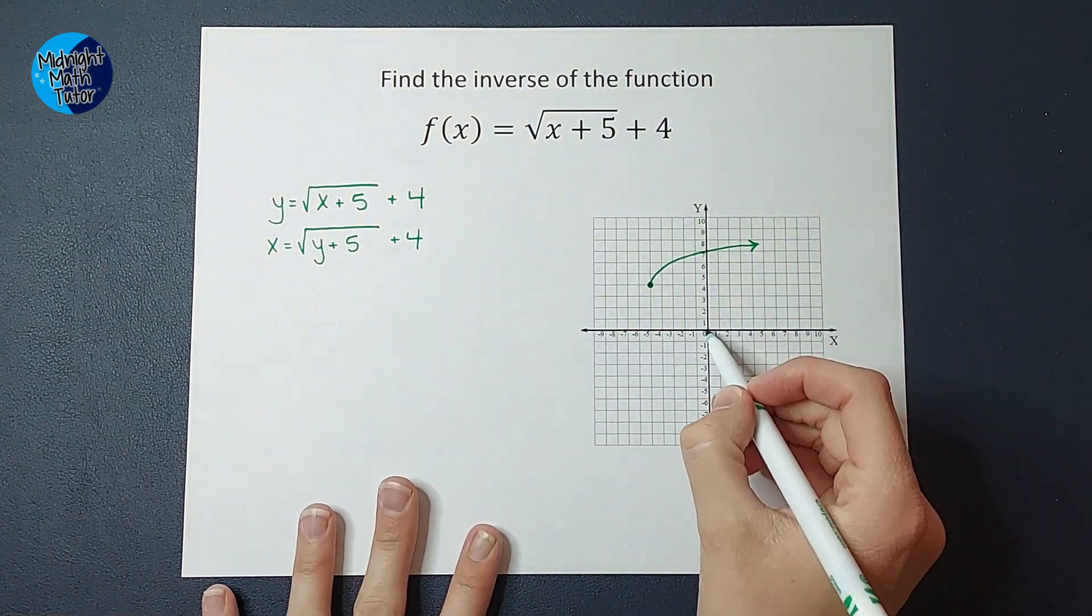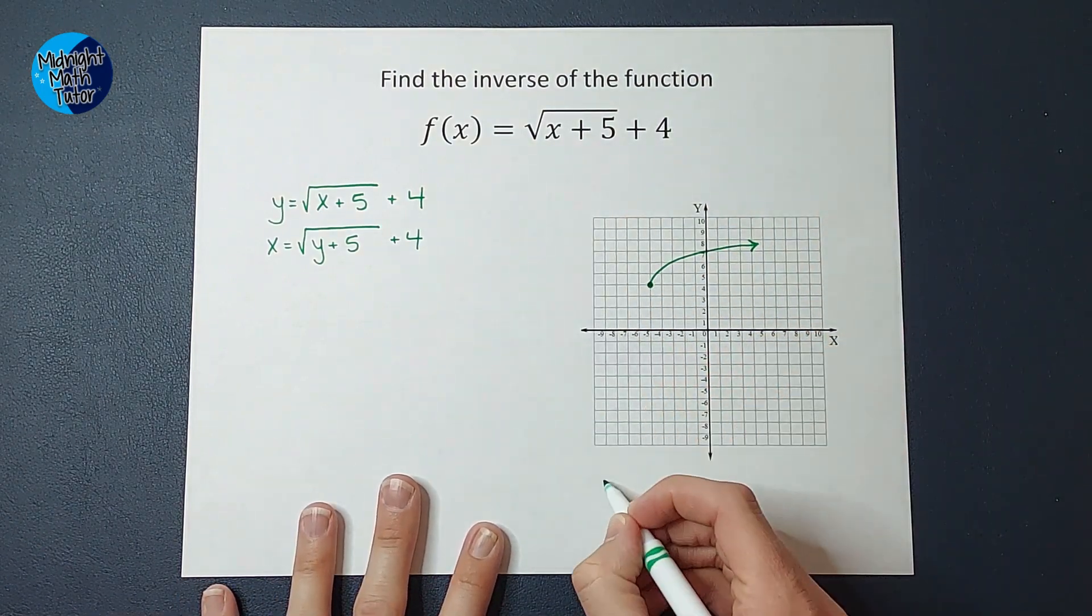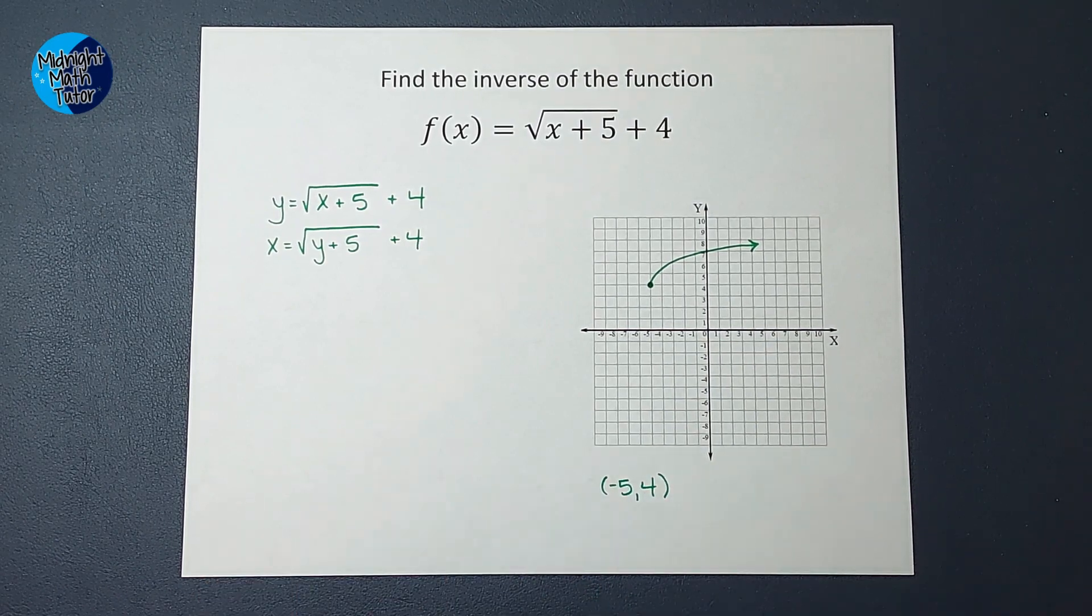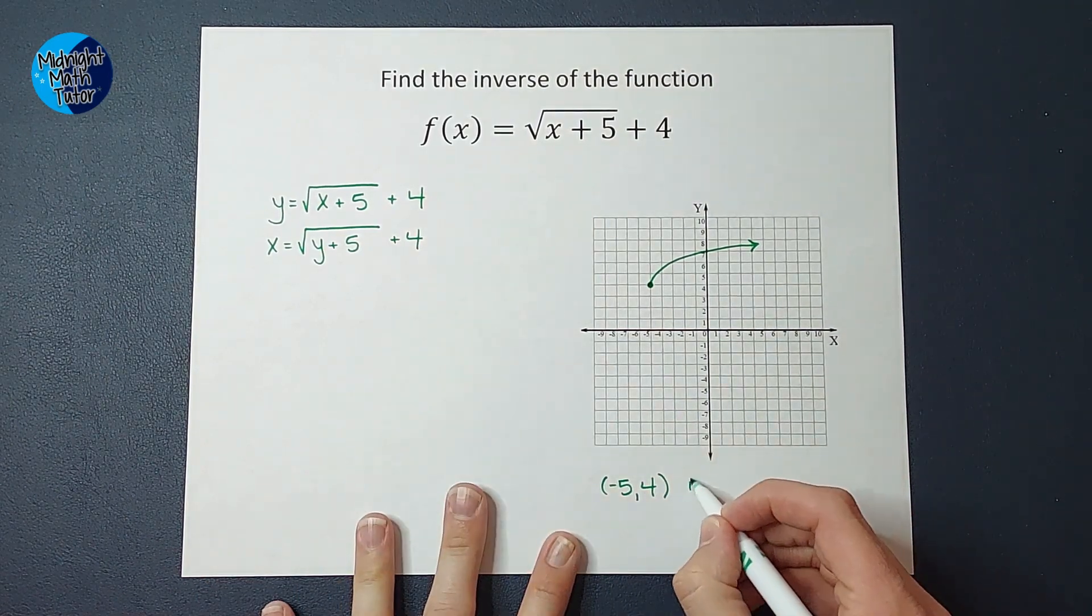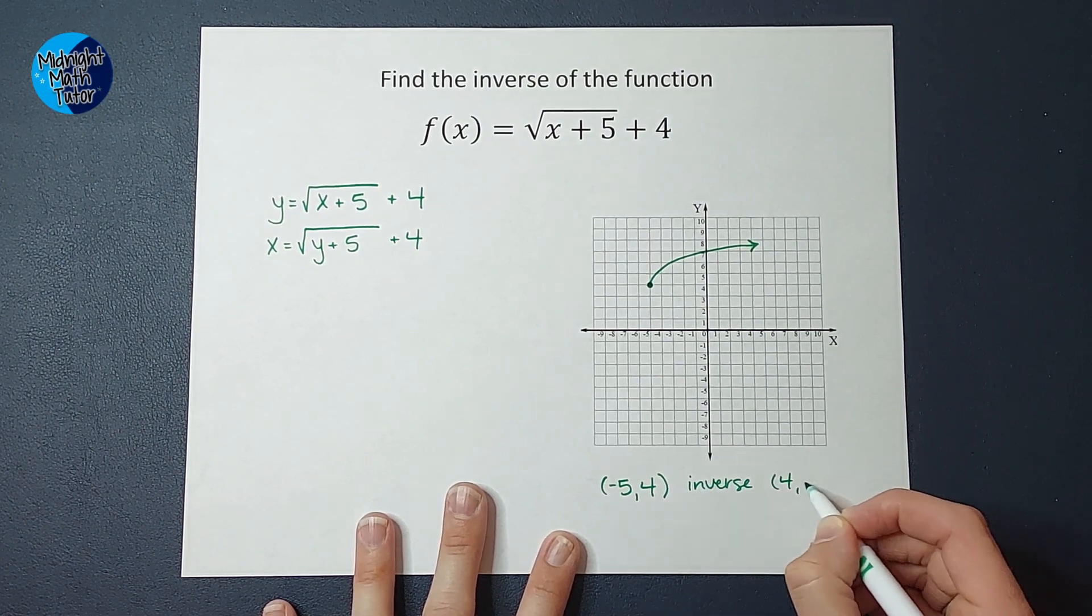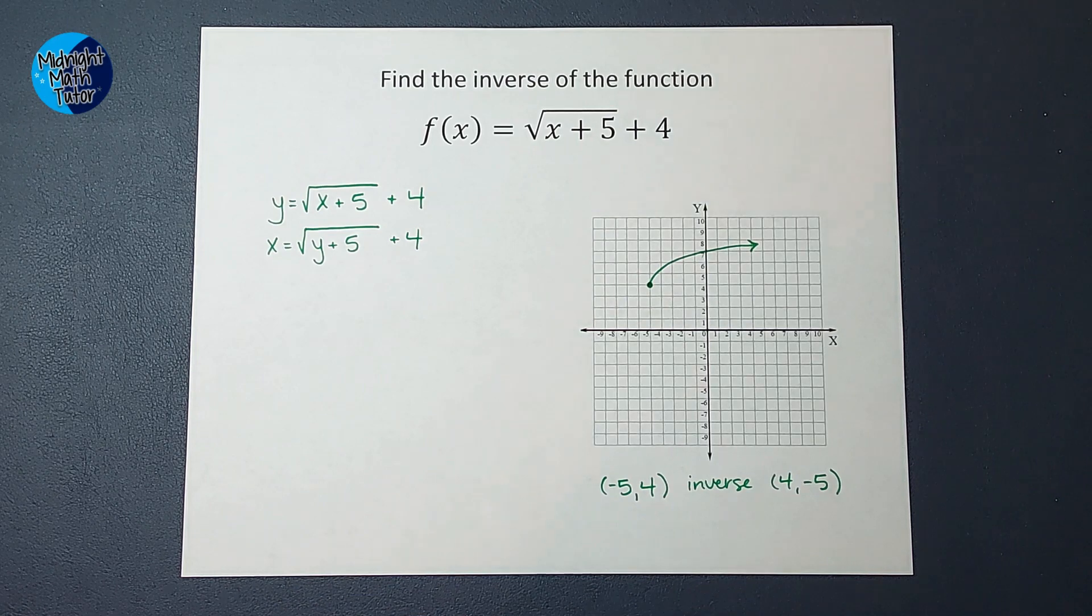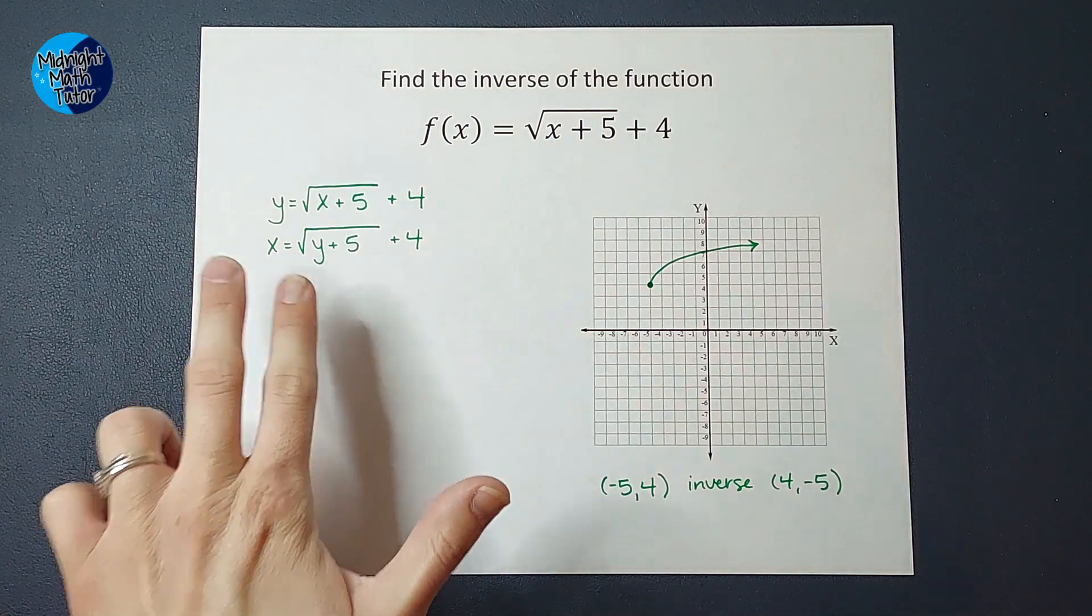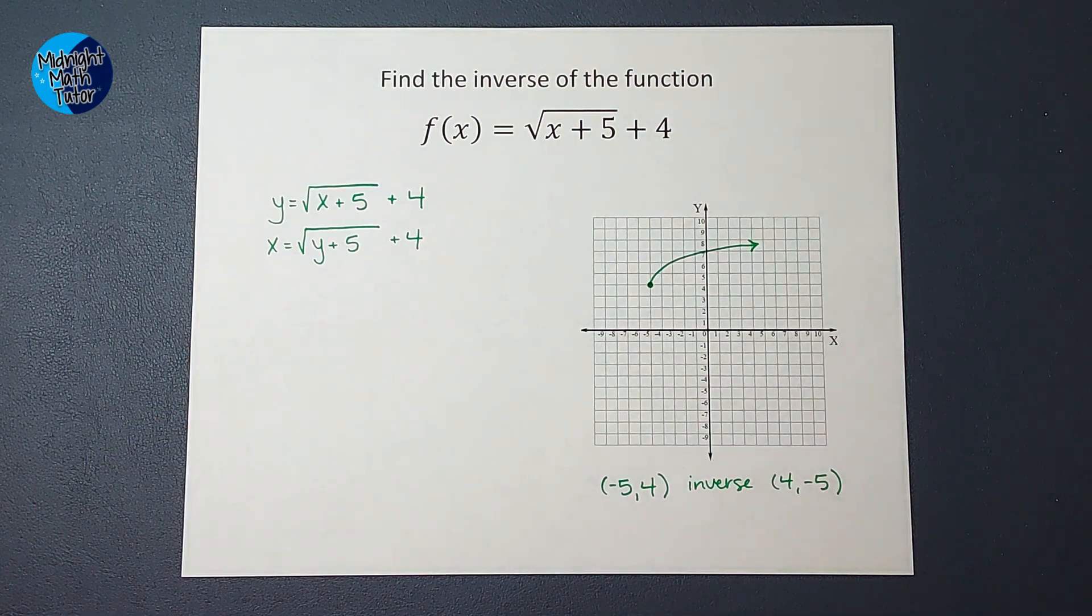We are going to have x equals the square root of y plus 5 plus 4. Now if you are thinking, this is weird, let me show you really fast. So on this graph here, I know I have the point negative 5, 4, right? That means the inverse of this graph has the point 4, negative 5. The x and y are switched for every point on this graph. So one way to find it is to switch them in our equation, and then we're going to solve for y again.